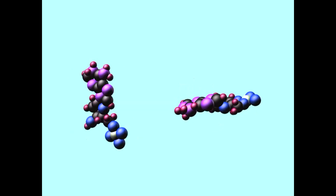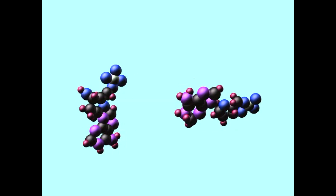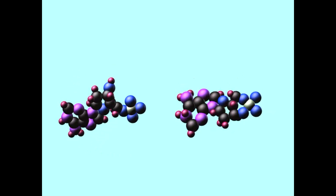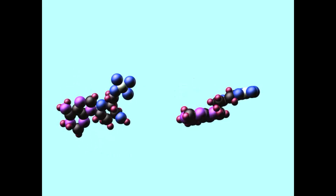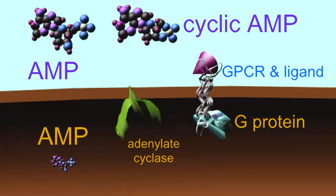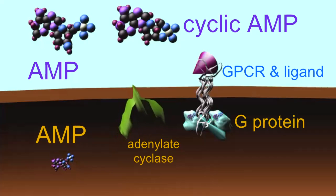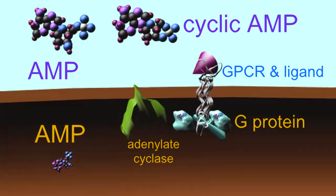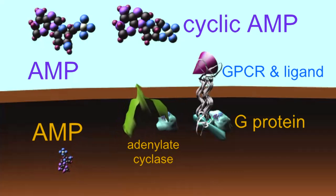Cyclic AMP is a form of the adenine nucleotide, where the phosphate group is attached to two separate points on the sugar — both the three and the five prime carbons. Cyclic AMP is produced from AMP by enzymes such as adenylate cyclase, which are stimulated by the G protein.